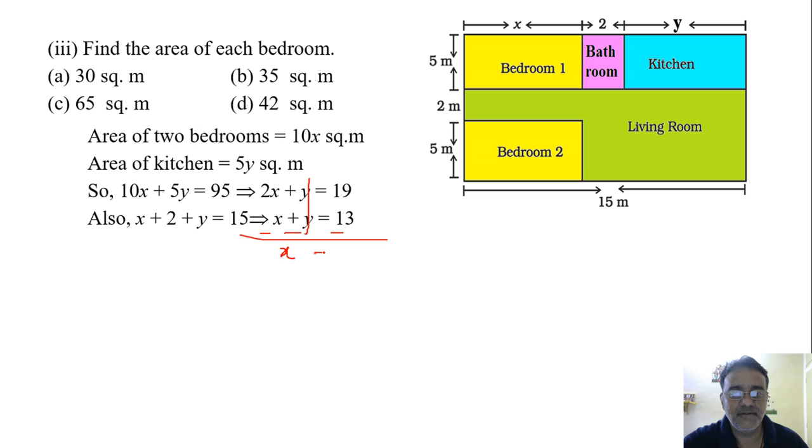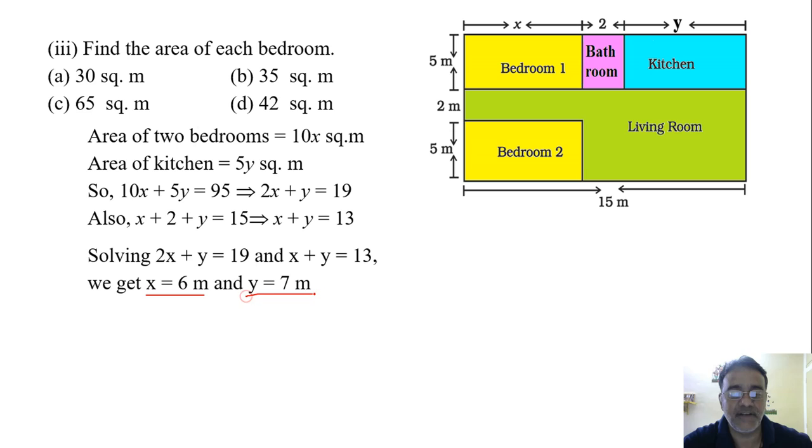If you subtract what you are going to get? x equals 6. So if x equals 6, what is y? 7, very good. So if we solve these two, we will get x equals 6 and y equals 7. Now the area of each bedroom, we know the area of bedroom is 5 into x. So 5 into 6.